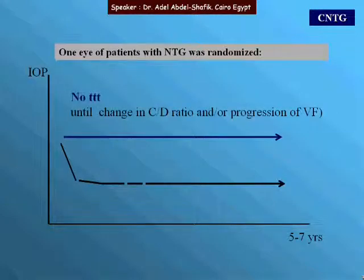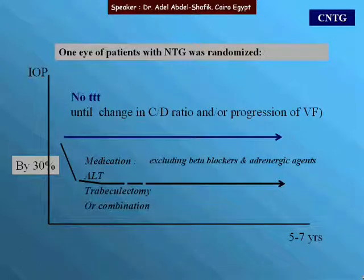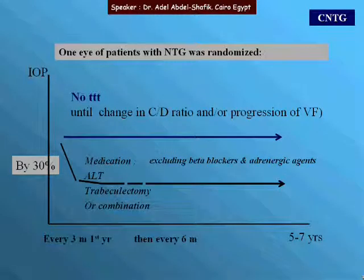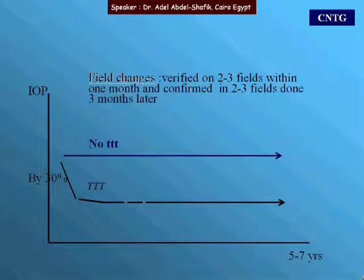In the no-treatment arm, patients were simply followed up unless further changes in disc appearance or visual field were documented. In the treated arm, medication, laser, surgery, or any combination could be used. The goal was to lower IOP by 30 percent. Beta blockers and adrenergic agents were excluded from medications as they may affect outcomes through direct effects on the eye or systemic side effects. Follow-up was every three months early on, then every six months after the first year, assessing both disc and visual field.